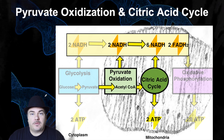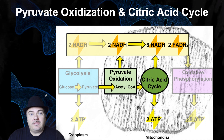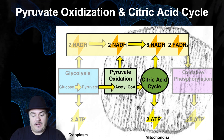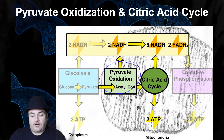Dr. Sage here, back with the third out of five videos on aerobic cellular respiration. Last time we talked about the first main stage of aerobic cellular respiration, which is called glycolysis. Today what we're going to discuss is the minor stage called pyruvate oxidation and the second main stage called the citric acid cycle, also known as the Krebs cycle.